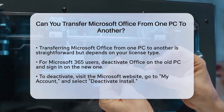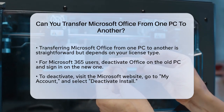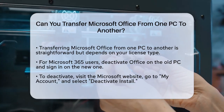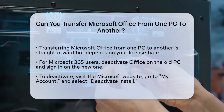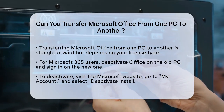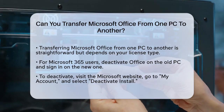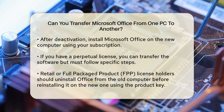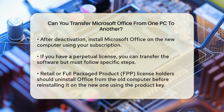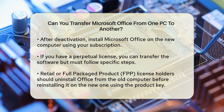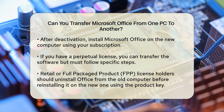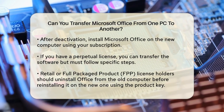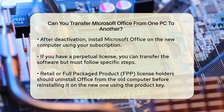To deactivate, sign into your account on the Microsoft website, go to the My Account section, and select Deactivate Install under the Install Information section. Once deactivated, you can install Microsoft Office on your new computer using your subscription.